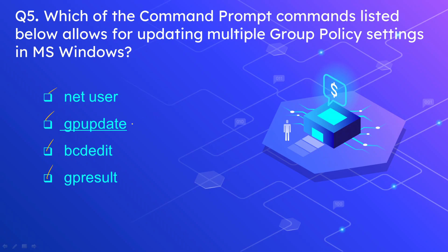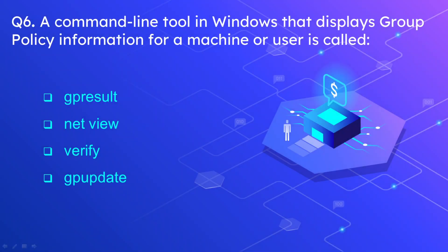The correct answer is gpupdate. Question 6: A command line tool in Windows that displays group policy information for a machine or a user is called what? The options are gpresult, netview, verify, and gpupdate. The correct answer is gpresult.